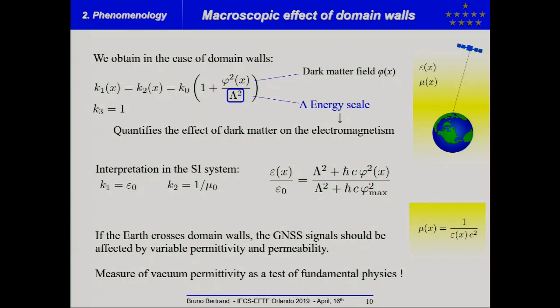And now, if you make the interpretation in the SI system, you have that, at the macroscopic scale, a variation of the absolute permittivity could be related to models, the underlying models, describing a dark scalar field, like dark matter domain walls.